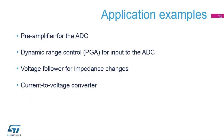The STM32L4's op-amps are suitable for the pre-amplification of the ADC input because the integrated PGA can enhance the dynamic range of the analog-to-digital converter. It is handy to use as an on-chip voltage follower instead of using an off-chip stand-alone op-amp. Its low-bias current allows it to properly perform as a current-to-voltage converter for the current-sensing function.